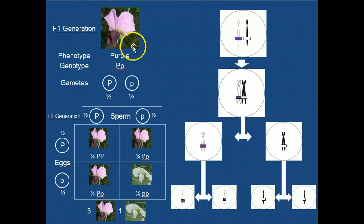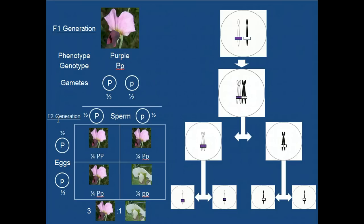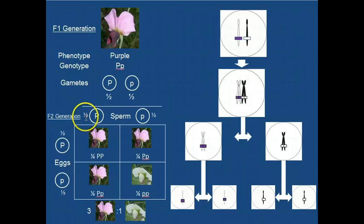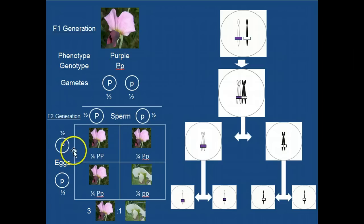Since you are allowing these individuals to self-fertilize to produce the F2 generation, that means that both the sperm cells and the egg cells will undergo meiosis the same way, such that half of the sperm cells will possess the big P allele, half of the sperm cells will possess the little P allele or white allele, and half of the egg cells will possess the big P allele or purple allele.